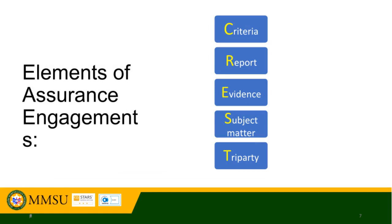We now summarize that there are five essential elements of an assurance engagement, represented by the acronym CREST. C means criteria. R is for report. E is for evidence. S is for subject matter. And T stands for tripartite or three-party relationship.